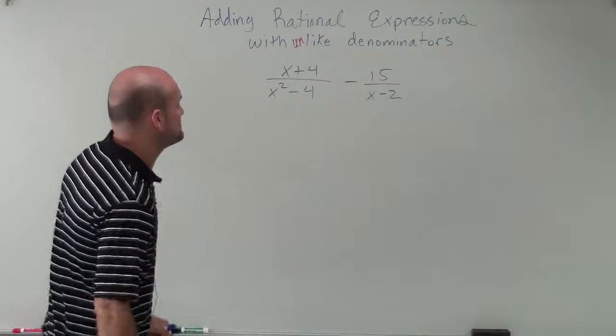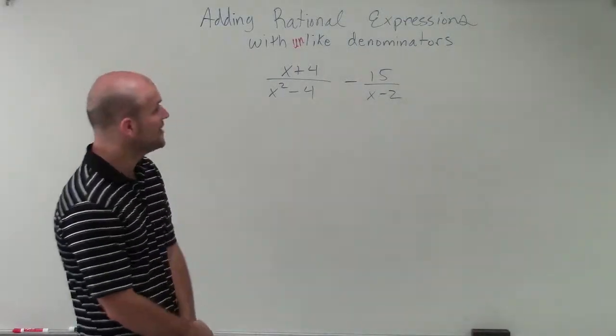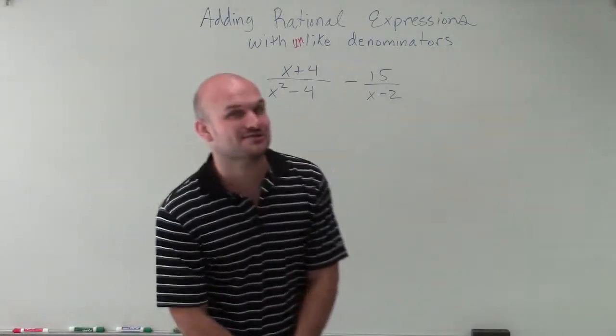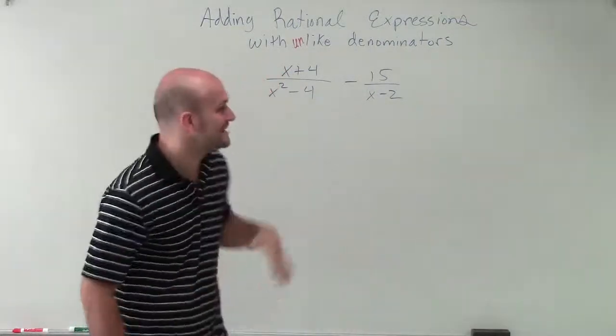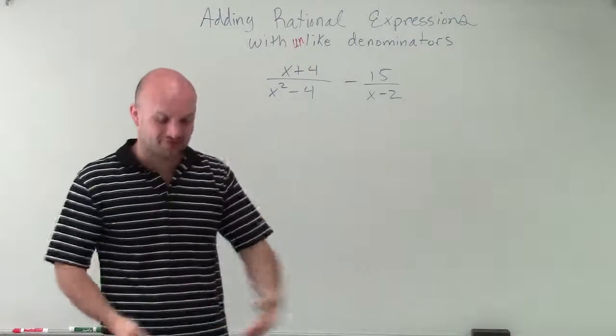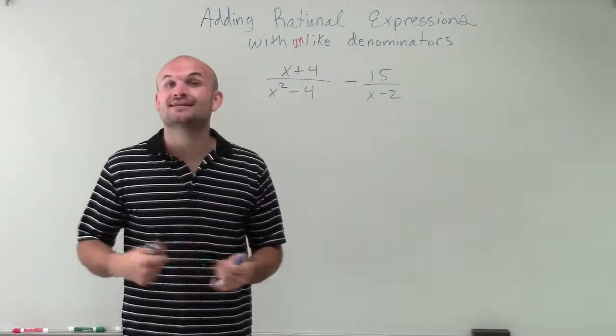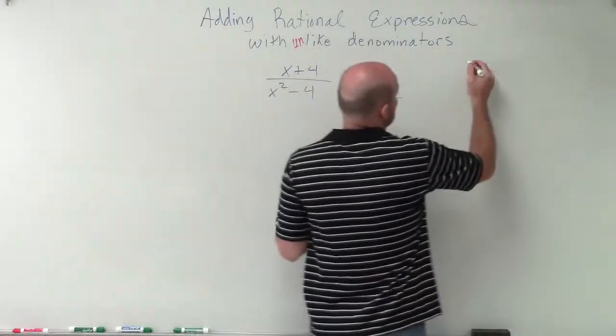OK, so what we have is x plus 4 divided by x squared minus 4 minus 15 over x minus 2. Now before we start looking at this and saying this LCM is going to be too difficult to find, let's go ahead and simplify this if possible.